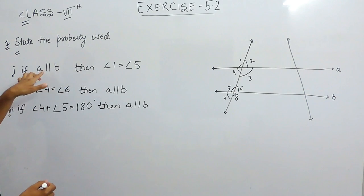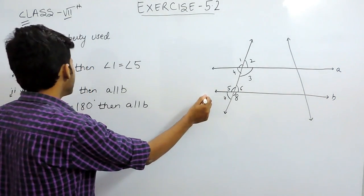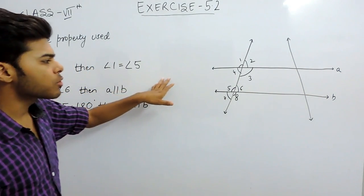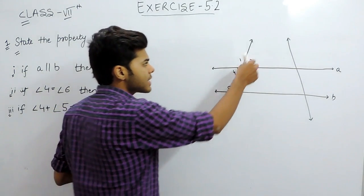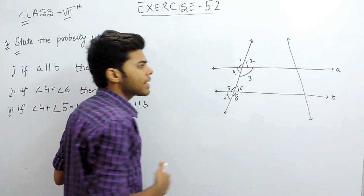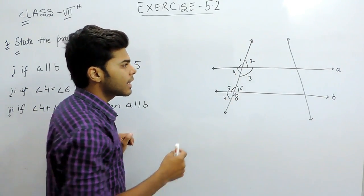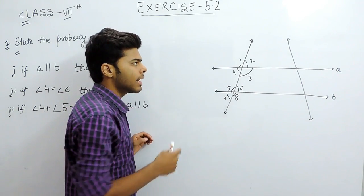The first one says that if A is parallel to B, then angle 1 is equal to angle 5. Now you can see that this is a transversal. Basically, a transversal is a line that bisects two given parallel lines.